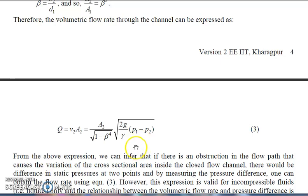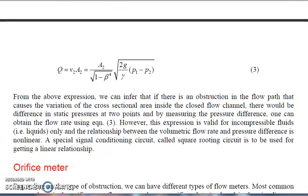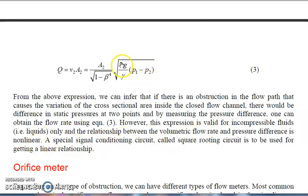We can measure the flow by measuring the pressure difference at two different sections of a pipe. This is the phenomenon giving us the idea of how flow measuring instruments work. From the above expression, if there is an obstruction in the flow path causing variation of cross-sectional area inside the closed flow channel, there will be a difference in static pressure at two points, and by measuring that pressure difference we can obtain the flow rate. The formula derived is for incompressible fluids, and the relationship between volumetric flow rate and pressure difference is non-linear — it has an under-root (square root) relation.